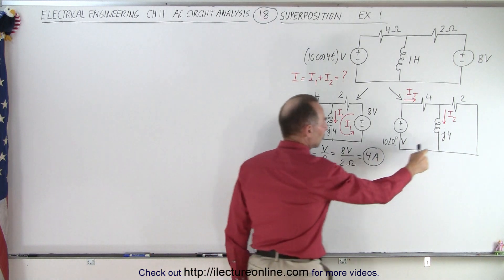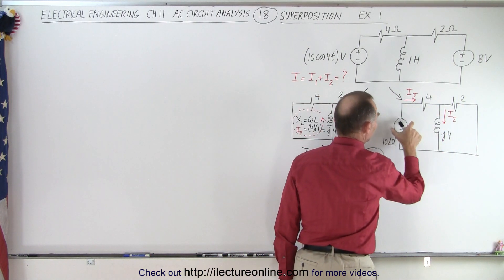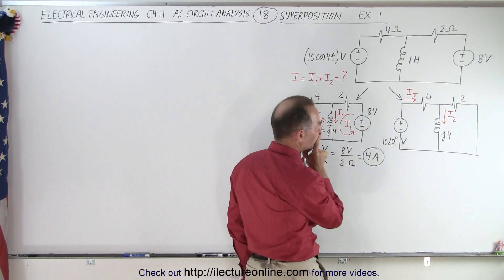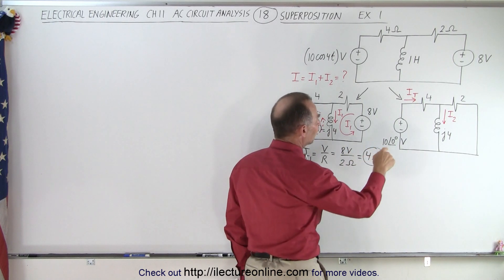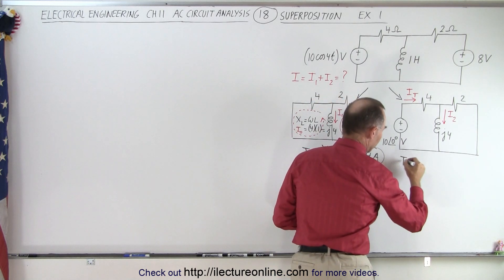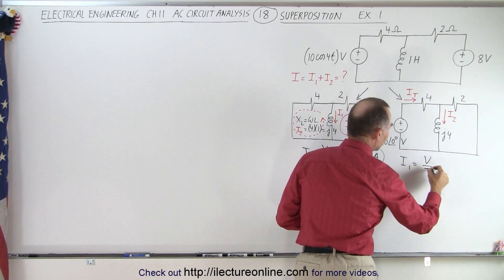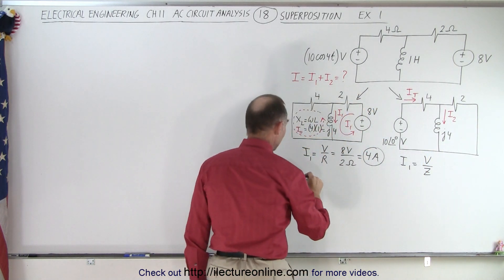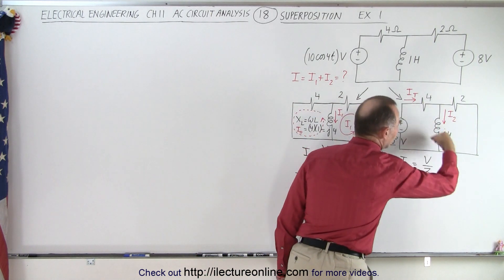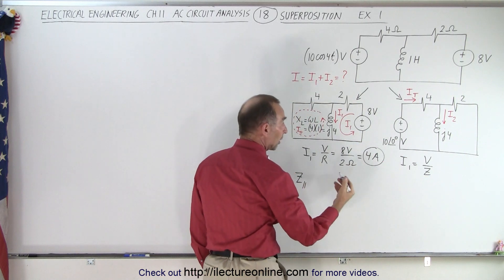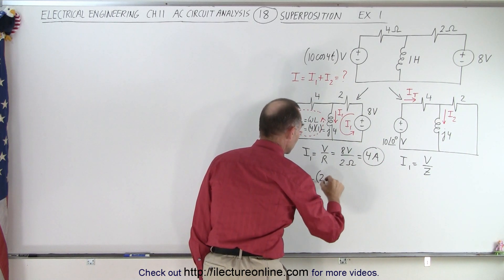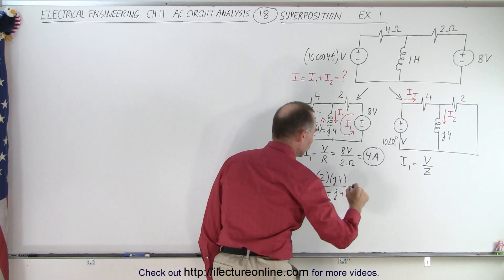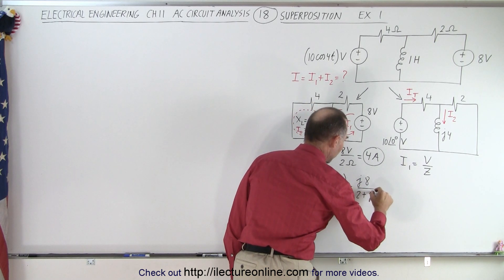So we have a J4 inductor, a 2 ohm resistor, a 4 ohm resistor, and an oscillating voltage source of 10 volts with a phase angle of 0 degrees. We first find the total current I_total, which equals the voltage supply divided by the total impedance of the entire circuit. To find the total impedance, we first find the impedance of the parallel portion — those two elements — using the product over the sum: 2 times J4 divided by 2 plus J4, which equals J8 over 2 plus J4.